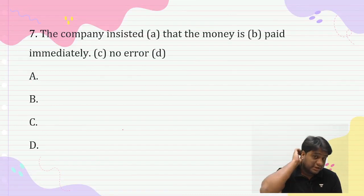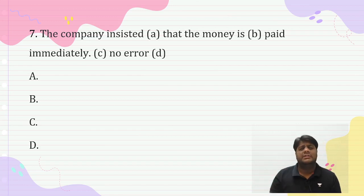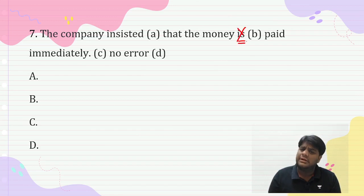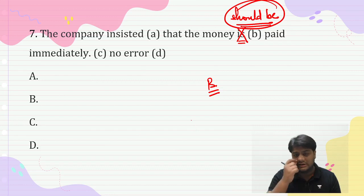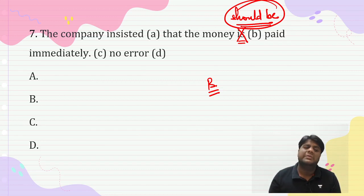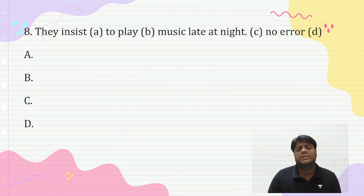'The company insisted that money is paid immediately.' Here, after 'insist' in a that-clause, the subjunctive form is required. You can also add 'should'. The correct sentence is 'The company insisted that money be paid immediately' or 'should be paid immediately'. Answer is clearly B part.